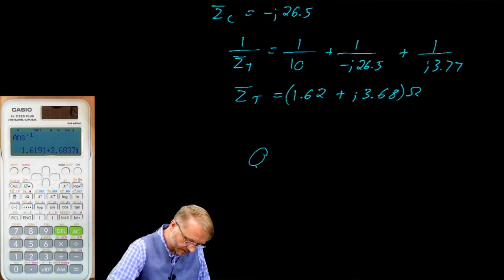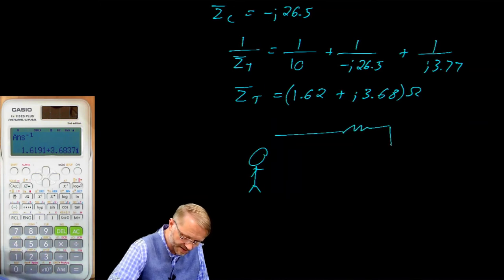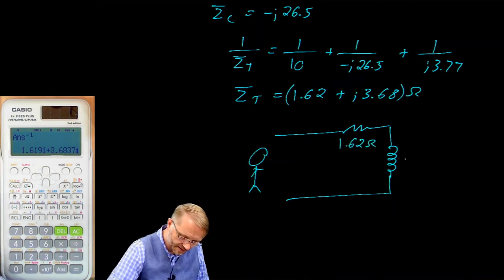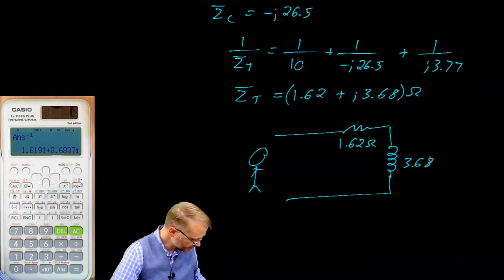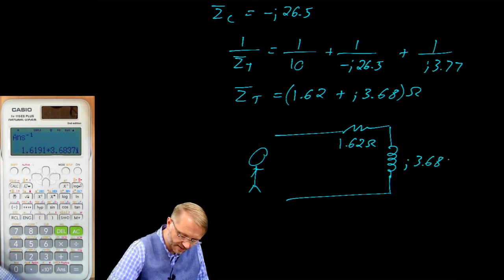So if you were to look into that circuit, you would see a resistor and an inductor. 1.62 ohms here and 3.68 ohms there.